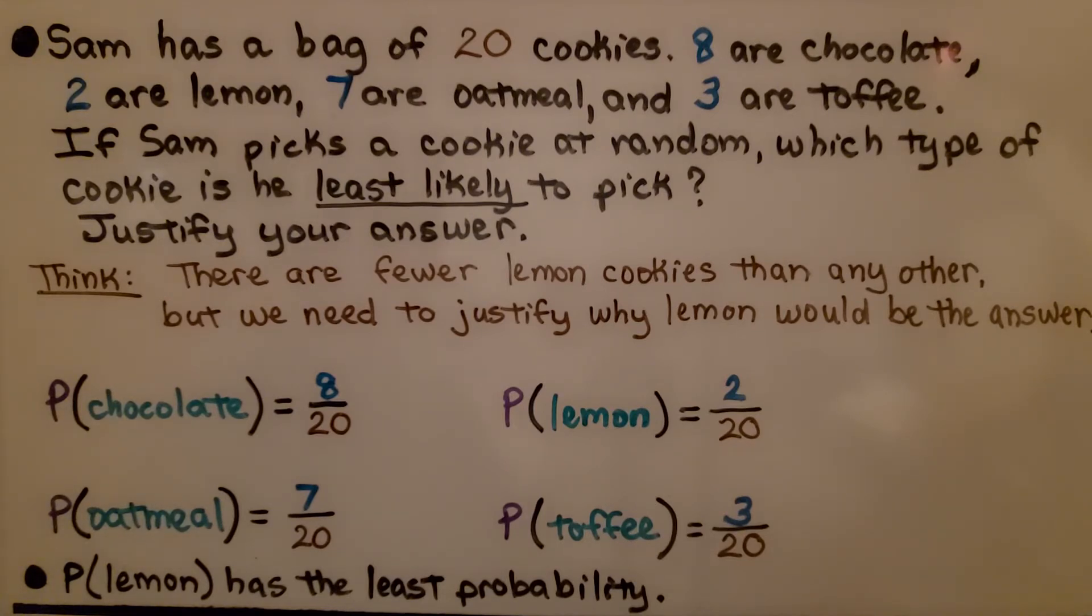We think, well, there are fewer lemon cookies than any other, but we need to justify why lemon would be the answer. We can see that there's only two out of the twenty cookies, so let's justify it.